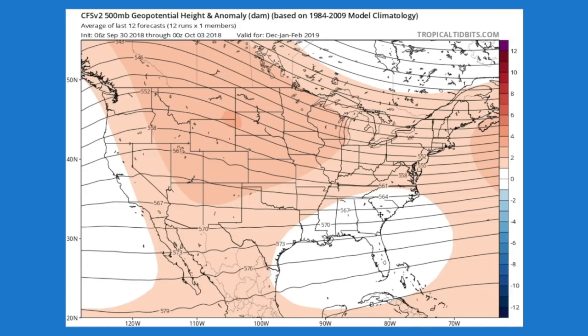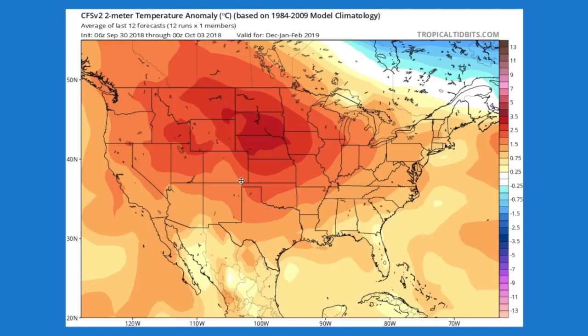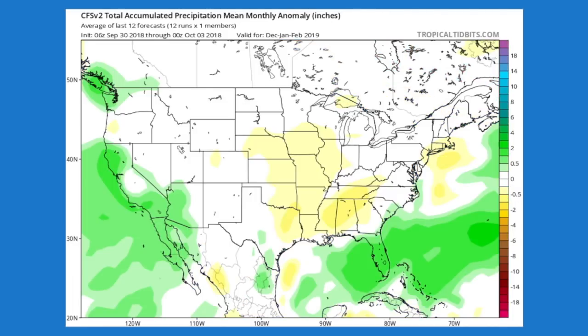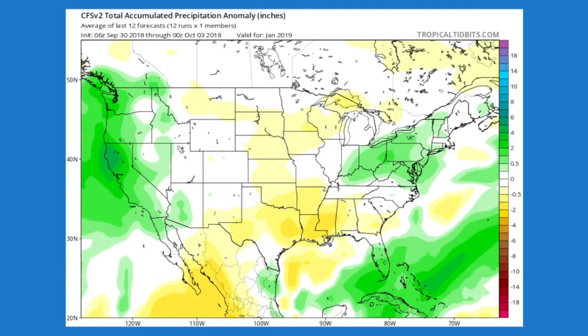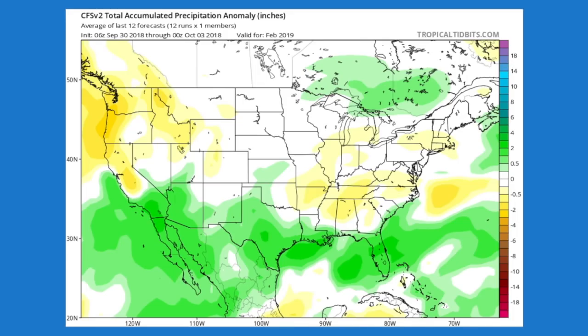Now, what are the models saying? The CFS I think is out to lunch — we're not really using it much except for the general pattern showing ridging in the west and troughing in the east, which looks about right. But the temperatures it shows are way warmer than I think it's going to be. For precipitation the CFS shows lots of precip in the southern U.S., which is probably good, but I disagree with the east half. The west half shows a mixed below-average signal.